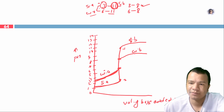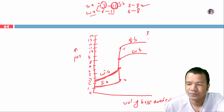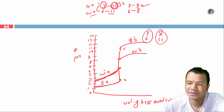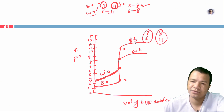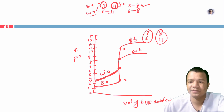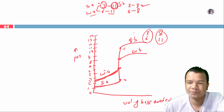To summarize: for strong acid versus strong base, the steep rise is 3 to 11, and both methyl orange and phenolphthalein are suitable. This concept of selecting indicators based on the titration curve's steep rise region is very important for our exam.